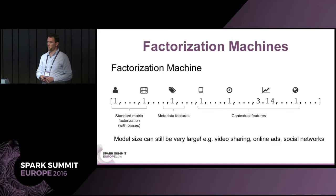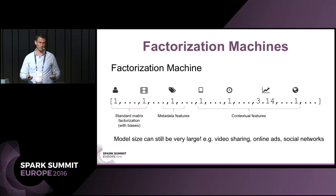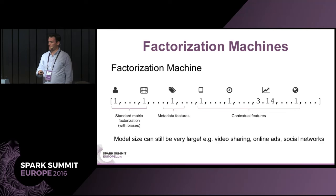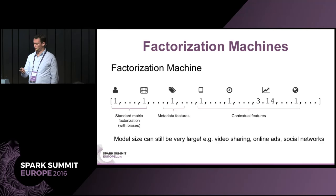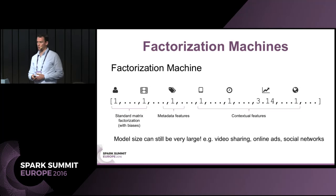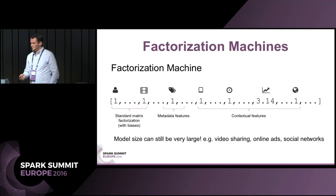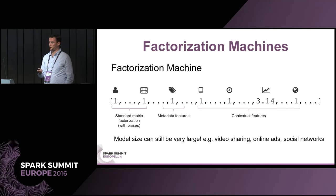Why use factorization machines over standard matrix factorization? They're more general. Using user IDs and movie IDs as features is exactly equivalent to standard matrix factorization with biases. But we can also include arbitrary categorical or real-valued features — categories and tags of movies, contextual data like device type, time of day, geolocation, or real-valued features like price trends in e-commerce. With feature engineering, FMs can effectively mimic almost any standard matrix factorization model.